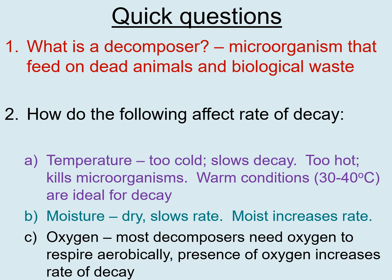Warm conditions between 30 to 40 degrees Celsius are ideal for decay, and that links back to enzymes. Enzyme activity inside all living things works best at around 30 to 40 degrees because you get more collisions and successful collisions between the enzyme and substrate, and it's not so hot that the enzymes get denatured. If you can't recall that information about enzymes, you probably need to revise B3 where you learned about digestion and digestive enzymes.